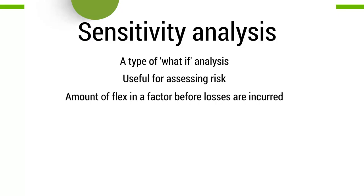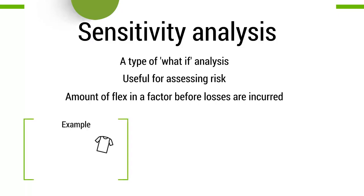If you think about the factor being revenue — how much can revenue change by before a project becomes unprofitable, becomes unviable? If revenue can drop 40% before the project is unviable, it is not sensitive to changes in revenue because that's a huge drop. But if the project becomes unprofitable simply by there being a 2% drop in revenue, then all of a sudden it looks very, very risky. This is best explained using an example, which is what we're going to do now.